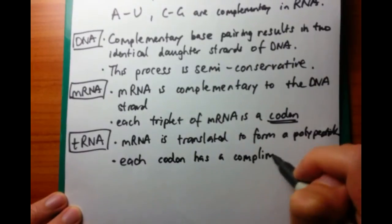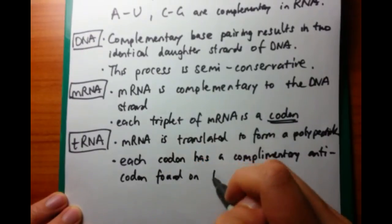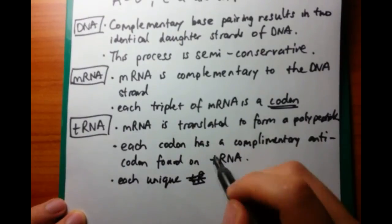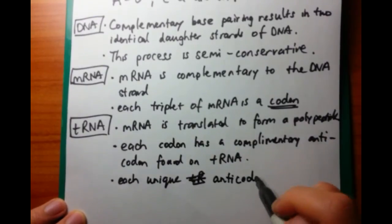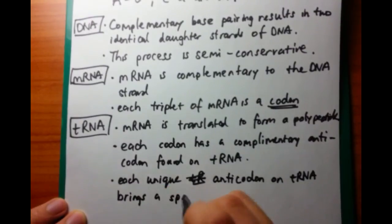And each codon, or each triplet code on the mRNA has a complementary anticodon which is found on the tRNA. And as a result, each tRNA molecule carries a specific amino acid on there which is used during protein synthesis, and then this results in elongation of the polypeptide.